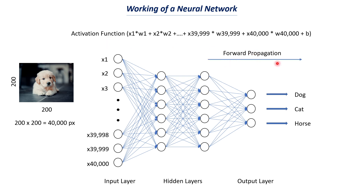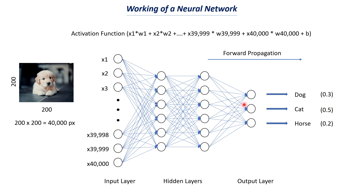Passing values through all the neurons across all layers of the network is called forward propagation. This flow continues through the hidden layers, and finally the three output neurons give a probability for each of the three categories. For example, the probabilities might be 0.3, 0.5, and 0.2, meaning the highest probability of 0.5 corresponds to the second output neuron — cat.